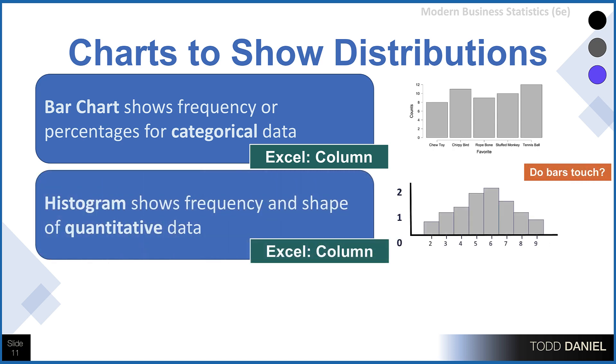For continuous or quantitative data, we would choose a histogram. Histograms are also created using the column chart option in Excel, with the additional step of reducing the gap between the bars to zero, and this is the defining characteristic between a bar chart and a histogram. In a bar chart, the bars are separated and do not touch. In a histogram, the bars do touch, indicating the continuous nature of the data.